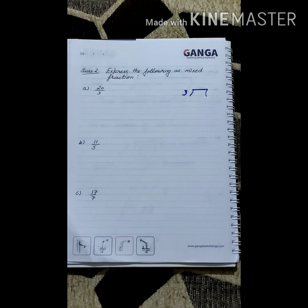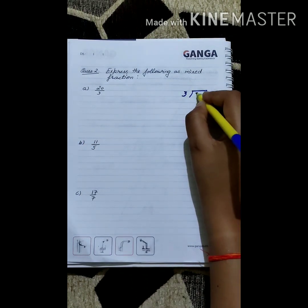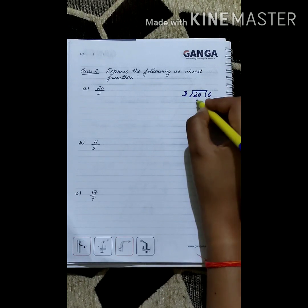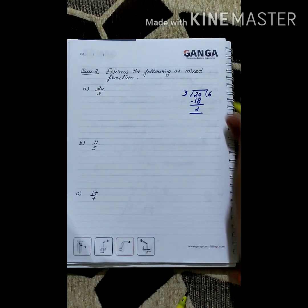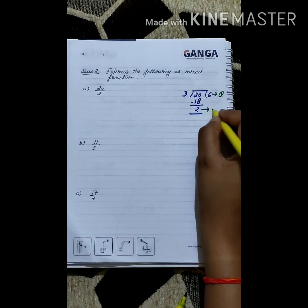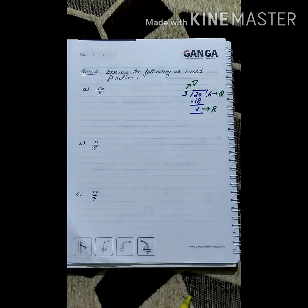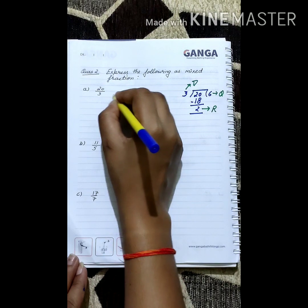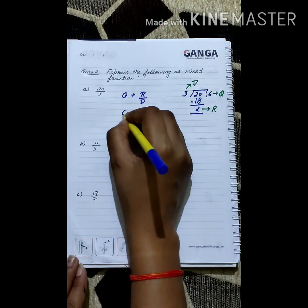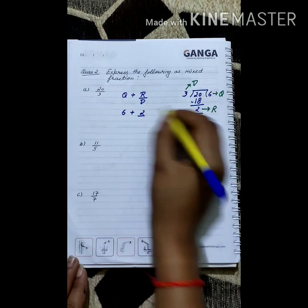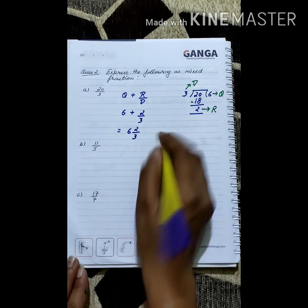Let's understand question number 2: express the following as mixed fractions. Part a: 20 by 3. We divide 20 by 3 — 3 sixes are 18, remainder 2. So quotient is 6, remainder is 2, divisor is 3. Using the formula, 6 plus 2 divided by 3 gives us 6 whole 2 divided by 3. That is our answer.